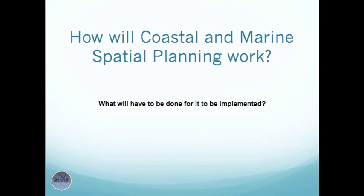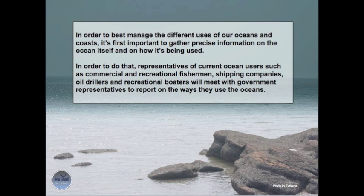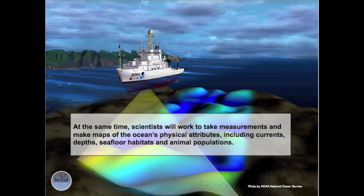How will Coastal and Marine Spatial Planning work? What will have to be done for it to be implemented? In order to best manage the different uses of our oceans and coasts, it's first important to gather precise information on the ocean itself and on how it's being used. Representatives of current ocean users — such as commercial and recreational fishermen, shipping companies, oil drillers, and recreational boaters — will meet with government representatives to report on the ways they use the oceans. At the same time, scientists will work to take measurements and make maps of the ocean's physical attributes, including currents, depths, seafloor habitats, and animal populations.